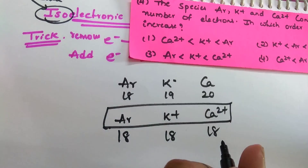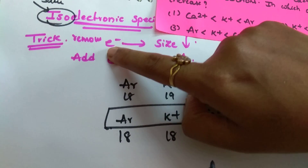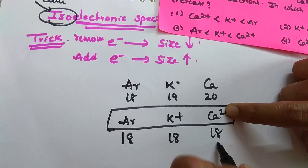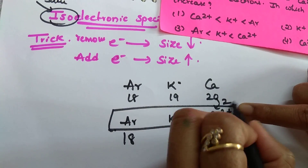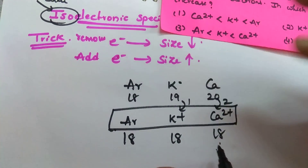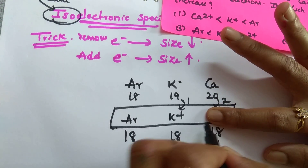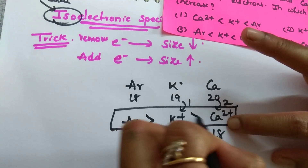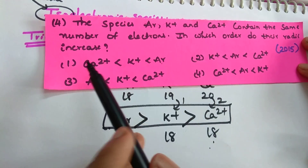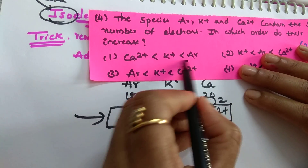What is the order they are asking? From Ca2+, 2 electrons are removed; from K+, only 1 electron is removed; Ar has none removed. The more electrons removed, the more the decrease in size. So Ca2+ has the least size, then K+, then Ar has the most. They ask for increasing order of radii, so: Ca2+ < K+ < Ar.